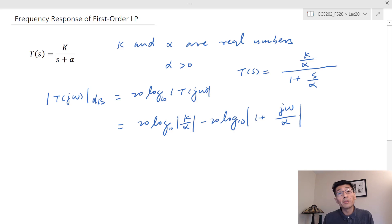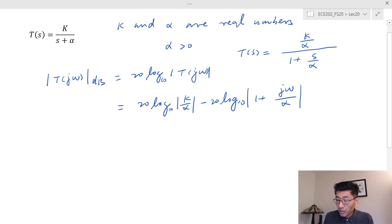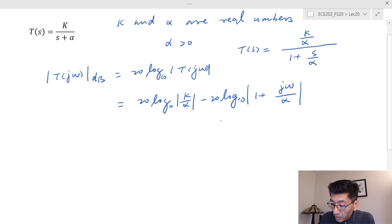If you remember the approximation from last time, this term would be something like: at low frequency you've got zero dB, and at high frequency you've got negative 20 dB per decade. The corner frequency, also called the cutoff frequency, is at ωc, which in this case equals alpha.